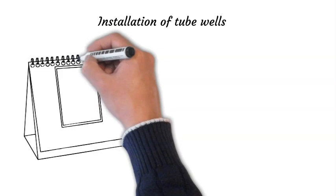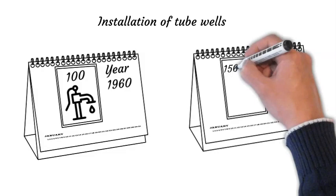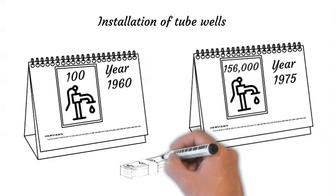The installation of tube wells on a landholding resulted in multiple cropping, a manifold increase in fertilizer consumption, and more than double increase in the value of crops — proving that tube well investment was highly profitable. The green revolution time period brought a lot of benefits for Pakistan.